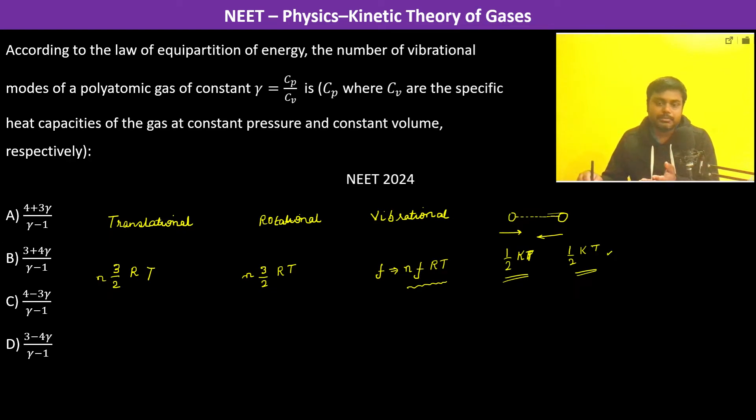We multiply it with F by N, that is the number of moles, and N A by Avogadro number also because in N moles there will be N into N A, this much will be the total number of molecules.